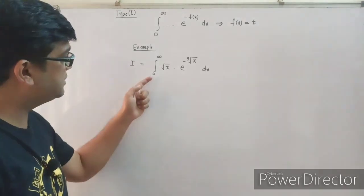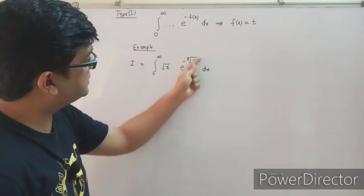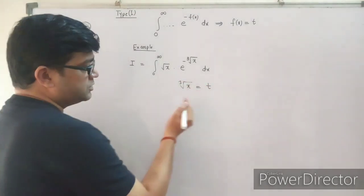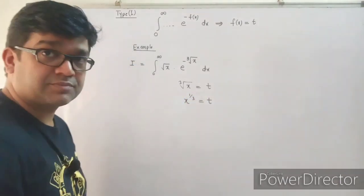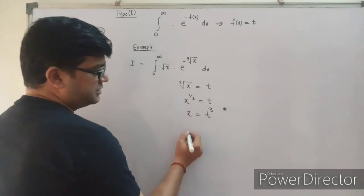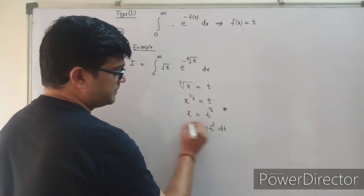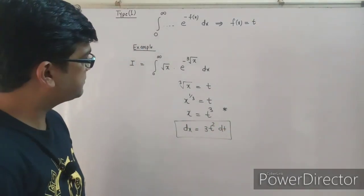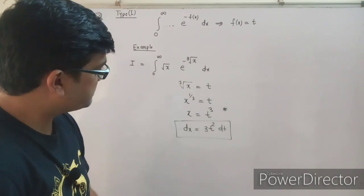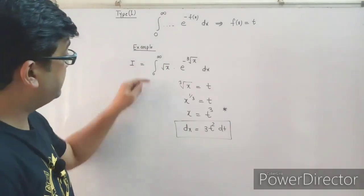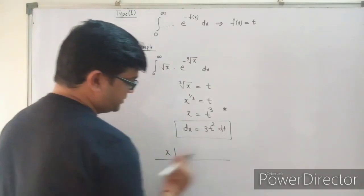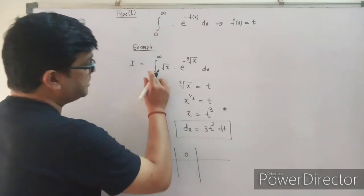For example, given an integral from 0 to infinity containing e raised to minus the cube root of x, we identify f(x) = x^(1/3), so we substitute t = x^(1/3), giving x = t³. Differentiating, dx = 3t² dt. The limits also need to be changed: when x = 0, t = 0; when x → ∞, t → ∞.